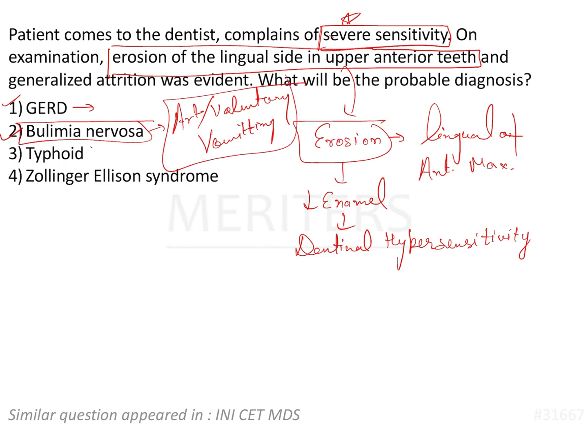The third condition is typhoid. In typhoid, there is a problem in the abdominal muscles. It is an infectious disease and it doesn't have anything to do with the erosion of the lingual side.